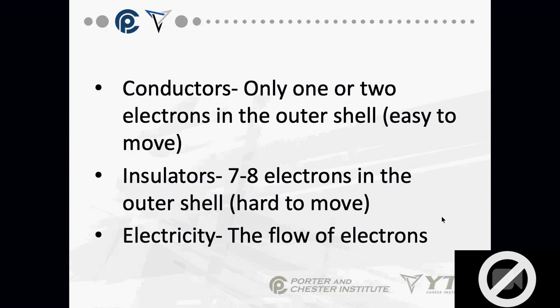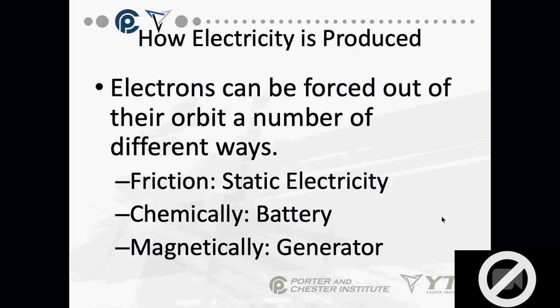Electricity is very simple — it's the flow of electrons. Electrons can be forced out of their orbit by friction, by chemical activity, or magnetically. Those are our three forms of producing power, most often. We also have solar power — photovoltaic — but that's a different issue.